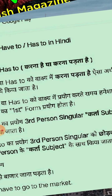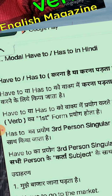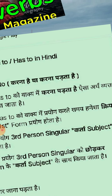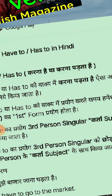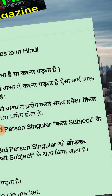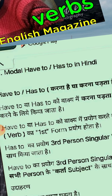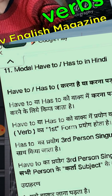Have to या had to को sentence में प्रयोग करते समय verb का first form प्रयोग होता है. Has to का प्रयोग third person singular के साथ किया जाता है. और singular subject के साथ, third person singular subject के साथ has to use किया जाता है.